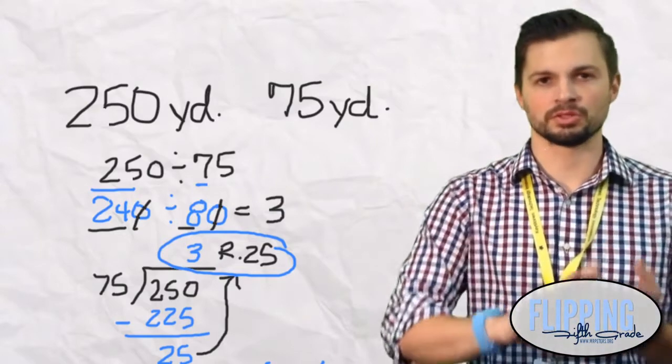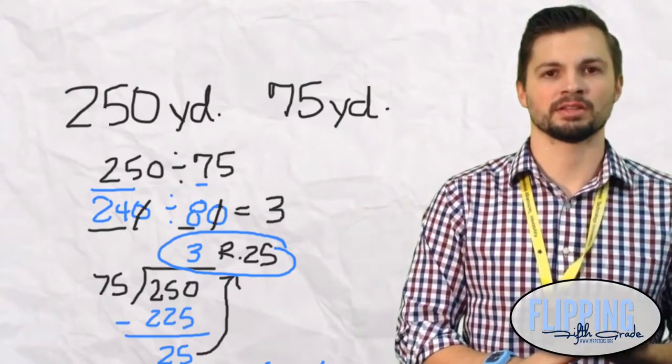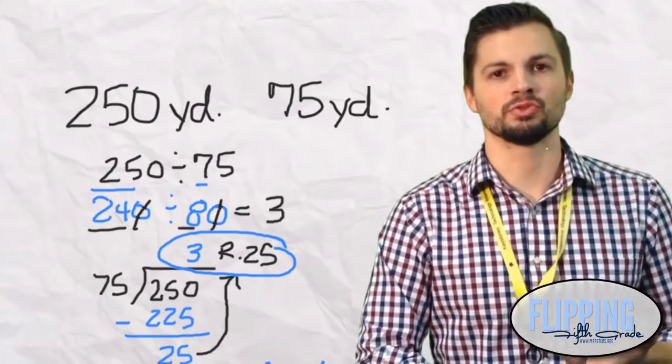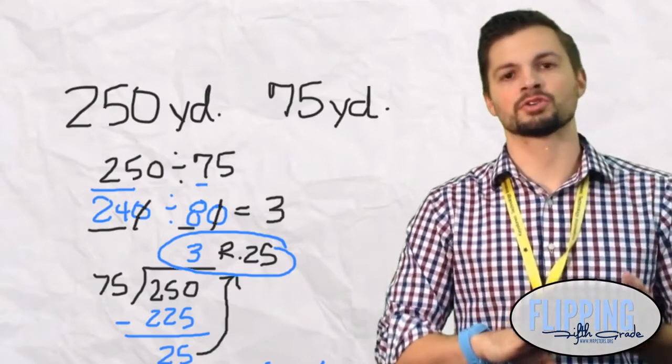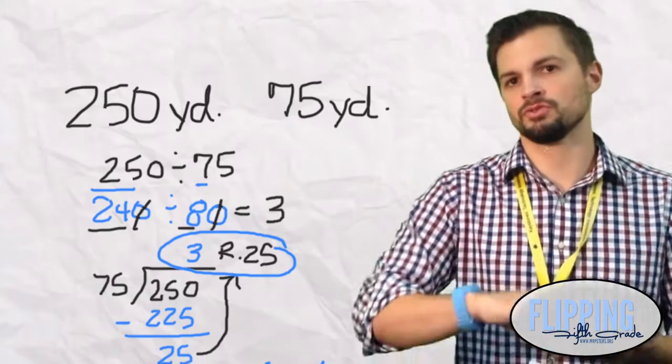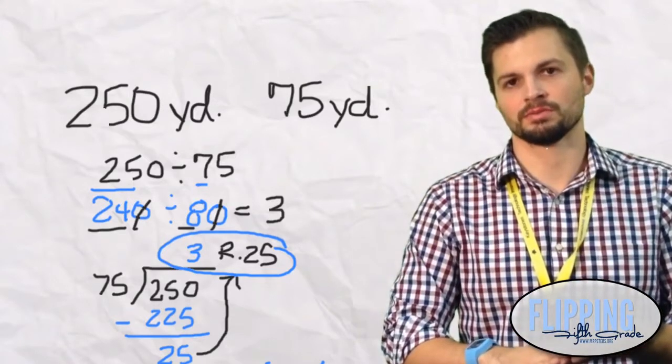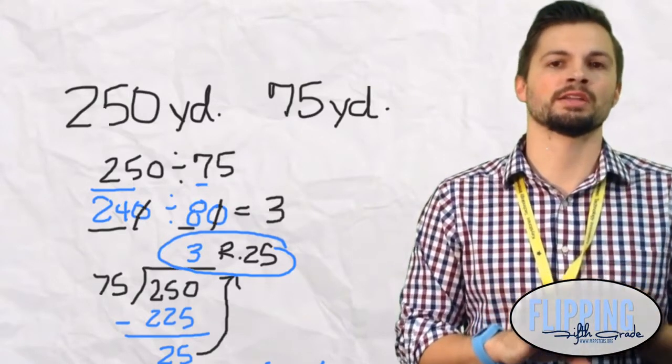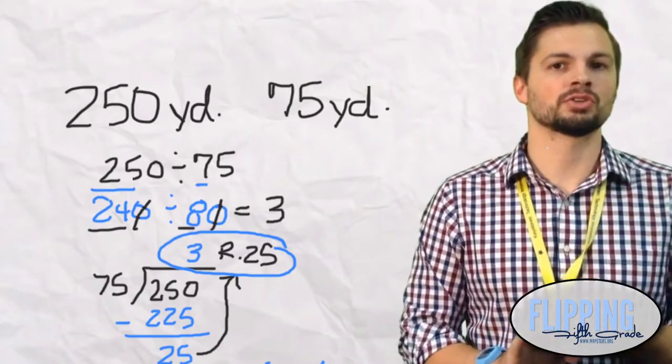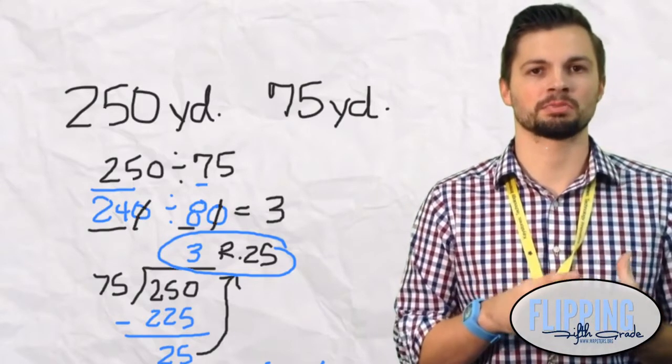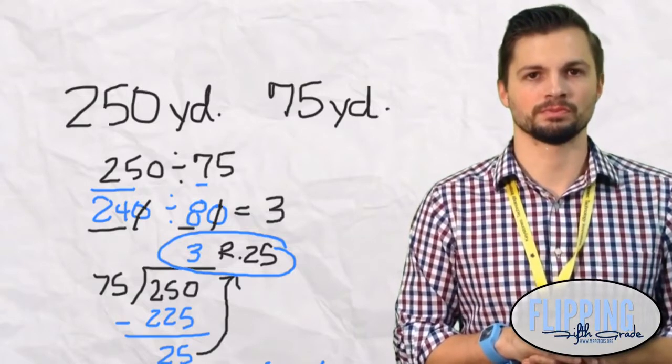So in this problem, you use compatible numbers to find the estimate. Then you divided using two-digit divisors, found your quotient with the remainder, and used reasonableness to determine your answer, not your solution. So you are really tying it all together in this problem. Let's see if you can do one or two on your own.